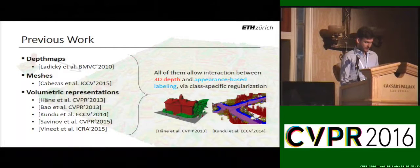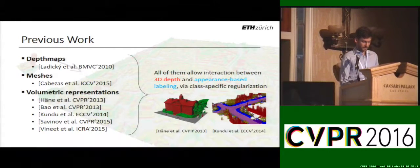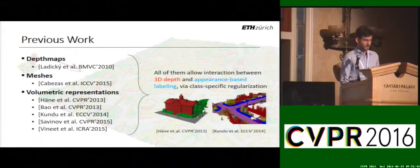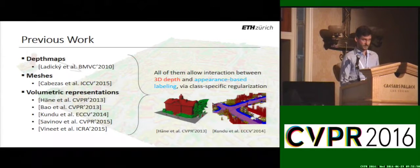I want to briefly highlight the methods which are closest in spirit to us. There is Henne et al. from 2013. Here, the authors employ a discrete, tight convex relaxation of the standard multi-label MRF problem in 3D. The underlying data structure corresponds to a regular voxel grid with equally sized voxels, and with regard to our method, it has the favorable property that its complexity scales with the number of voxels.